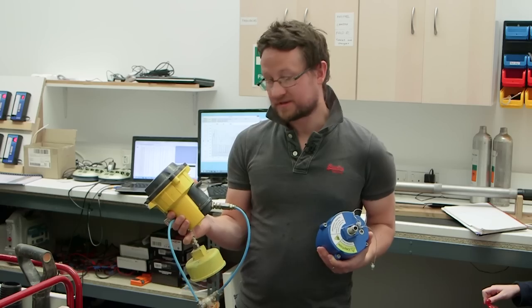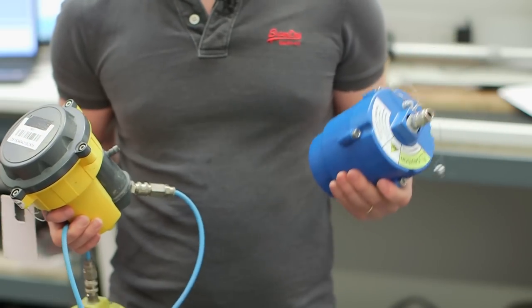This one here is the chloroclam. It measures chlorine concentration. And this one here is the hydroclam. It measures turbidity.